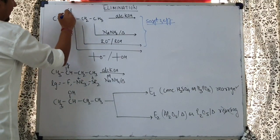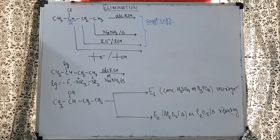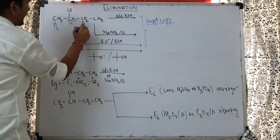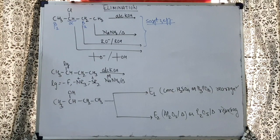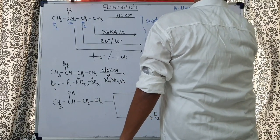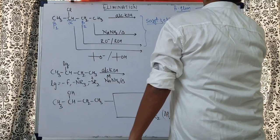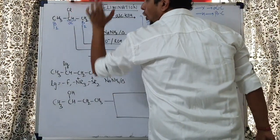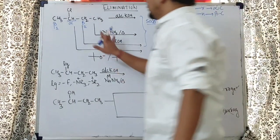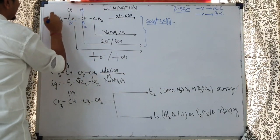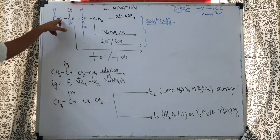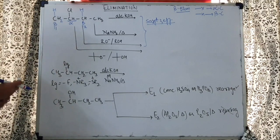What is the Saytzeff product? If this is the chlorine, this carbon is called the alpha carbon — the carbon bearing the halogen. The neighboring carbons are called beta carbons. Let's say we have beta 1 and beta 2. This is called beta elimination: the halogen goes from the alpha carbon and the hydrogen goes from a beta carbon. So the neighboring carbon loses the hydrogen for the elimination reaction. In E2, this is anti elimination — the hydrogen should be on the bottom and the Cl on the top, meaning they are in opposite directions.